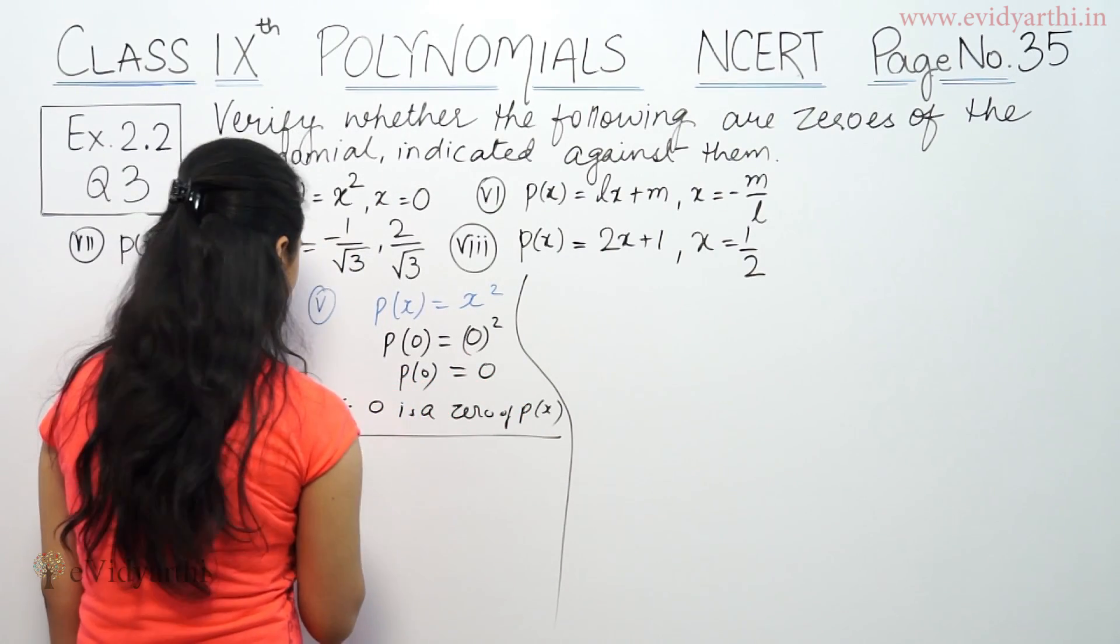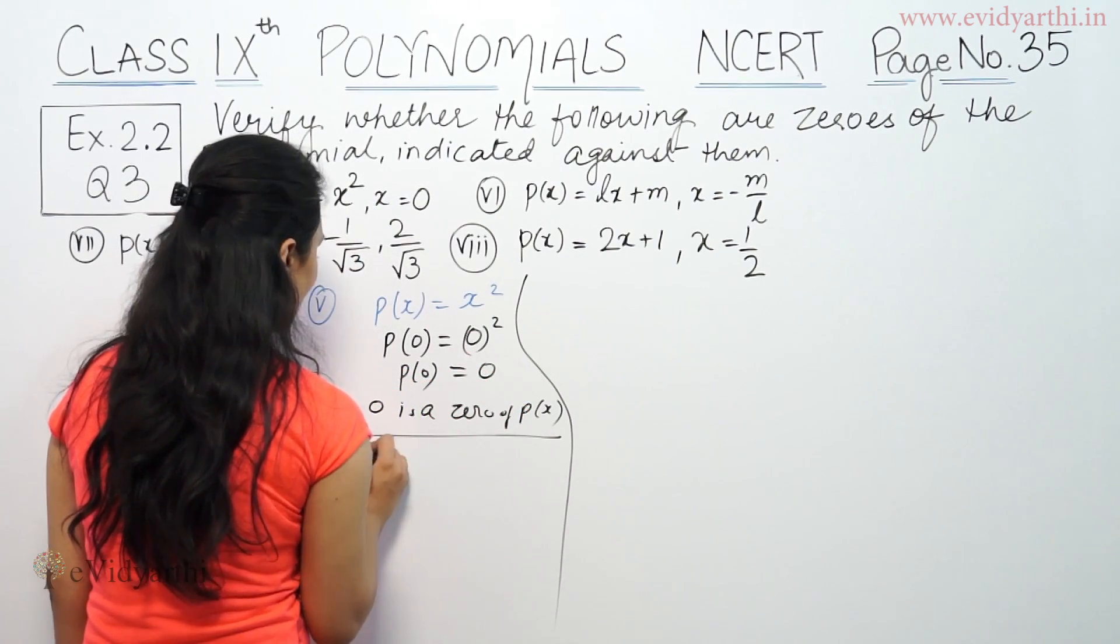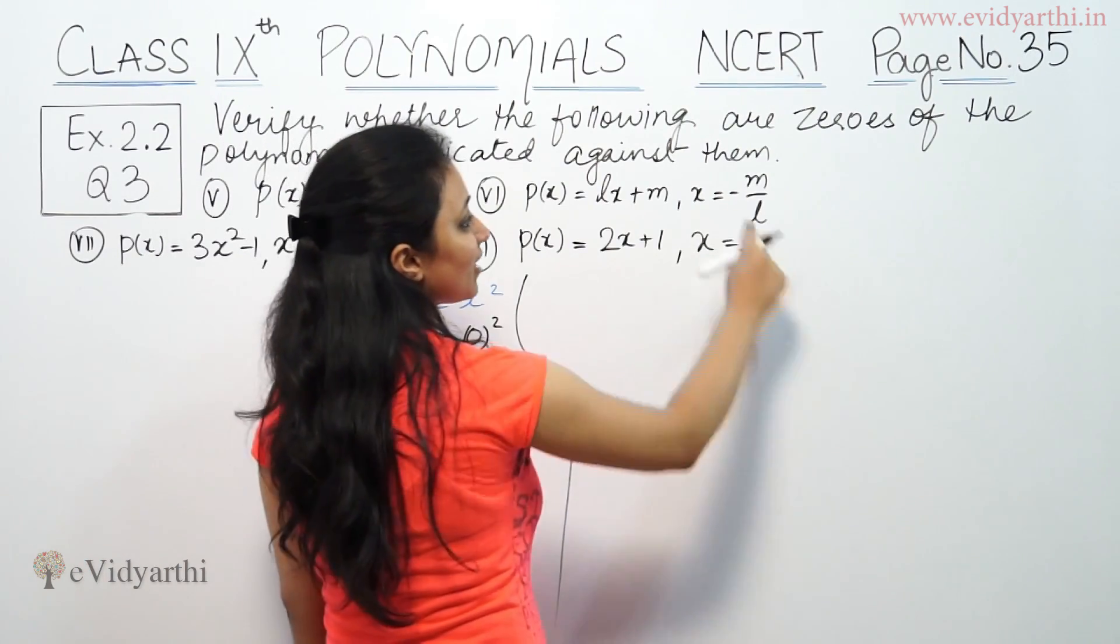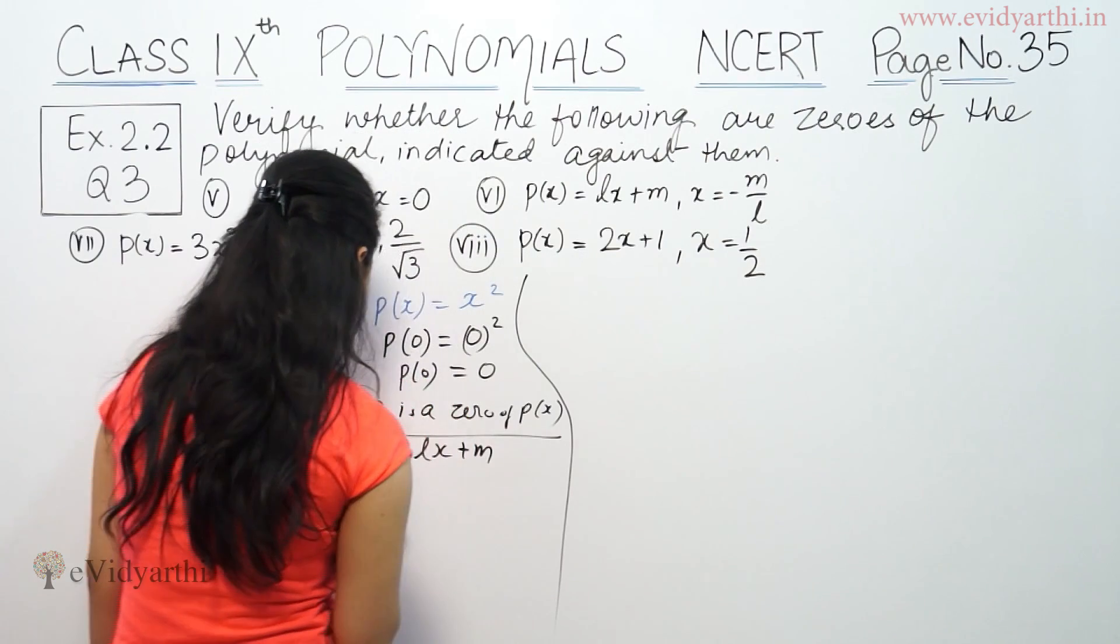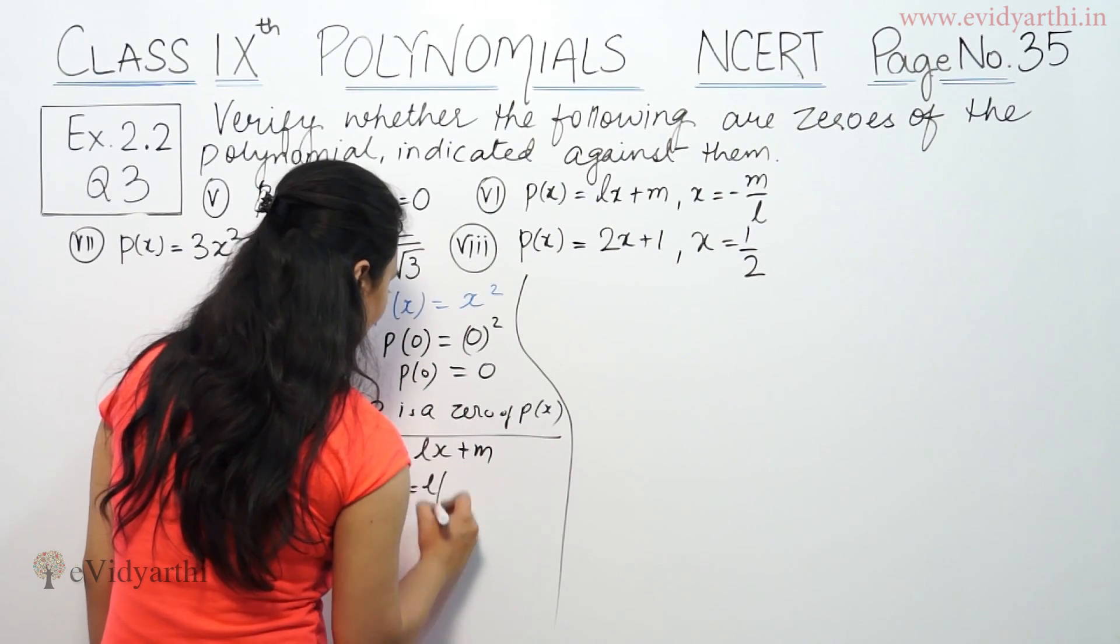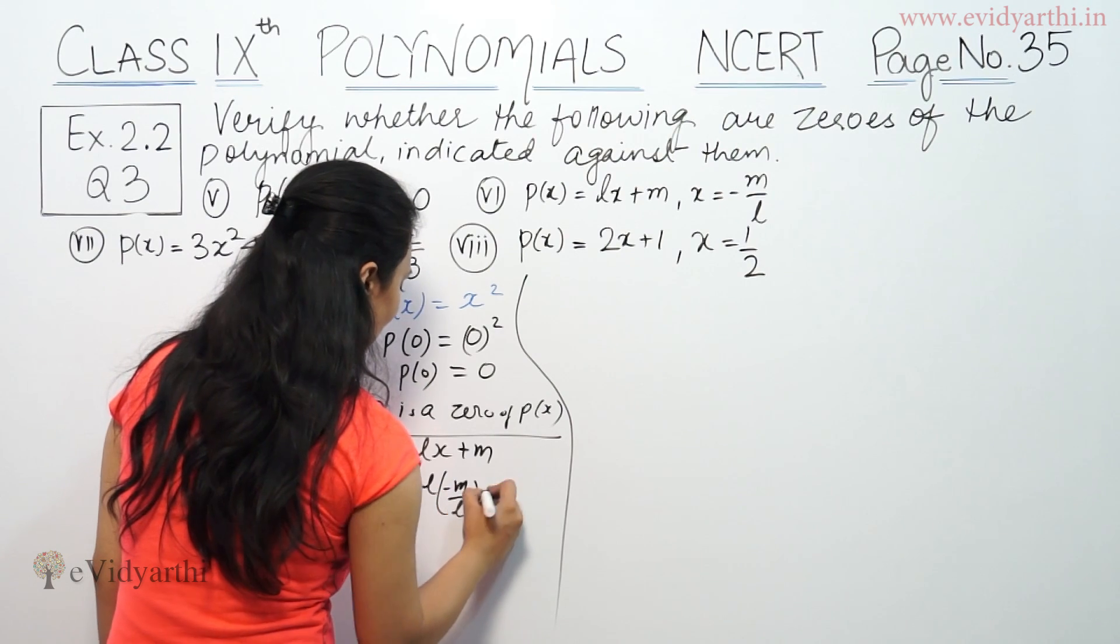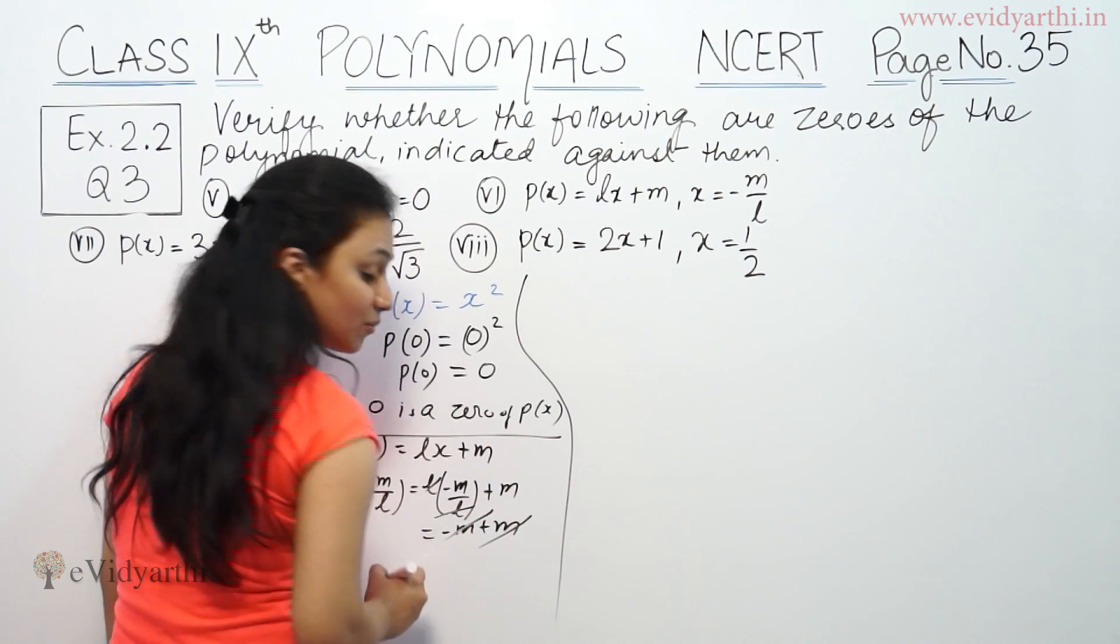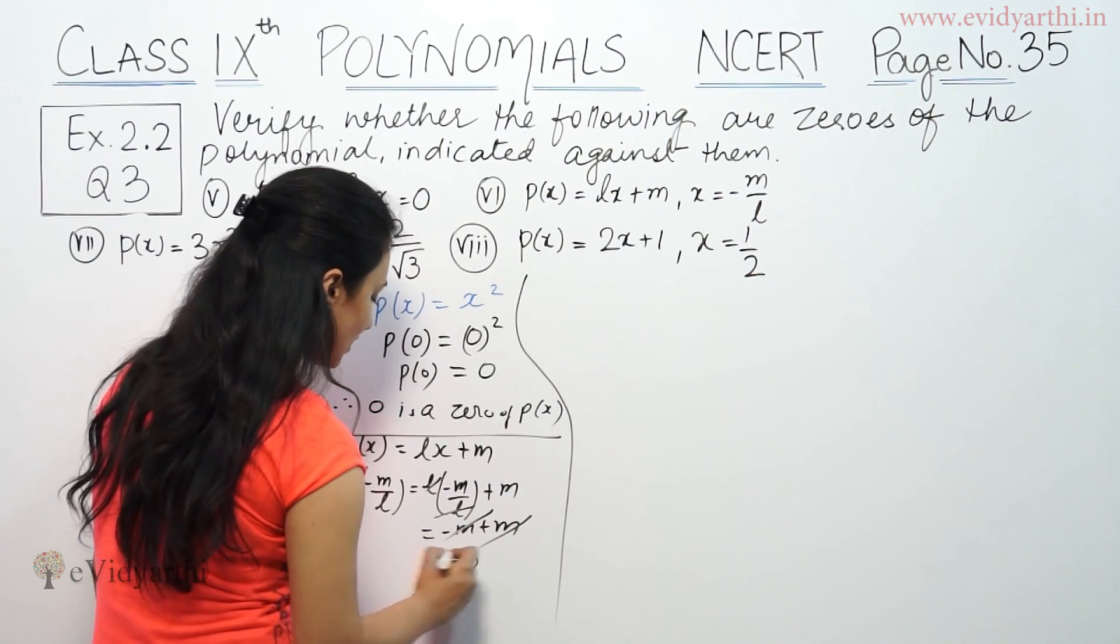Same way as part number 6, which is P(x) = lx + m. Now check the x value as x = -m/l. So we have minus m plus m, all the negative cancels, so we have 0.